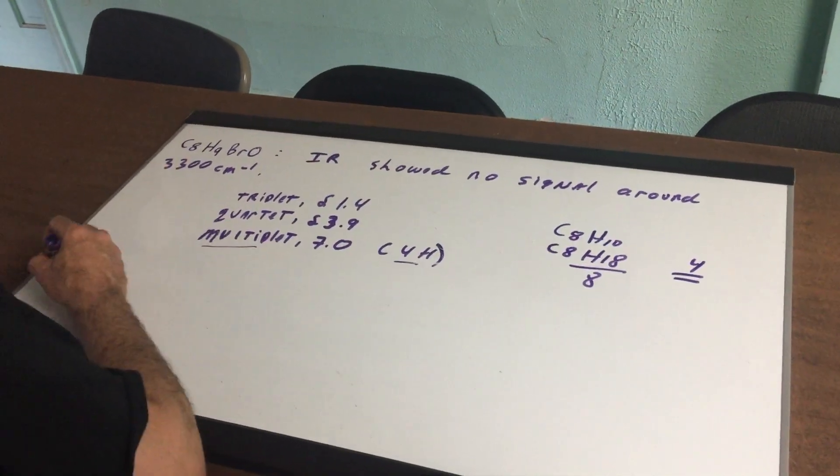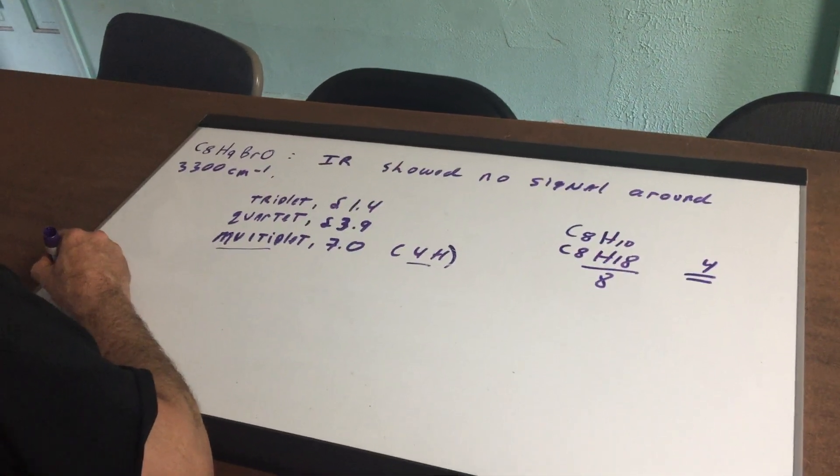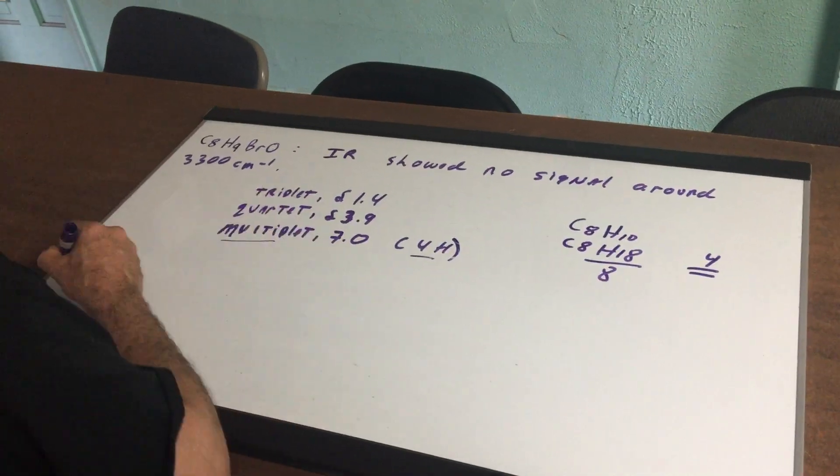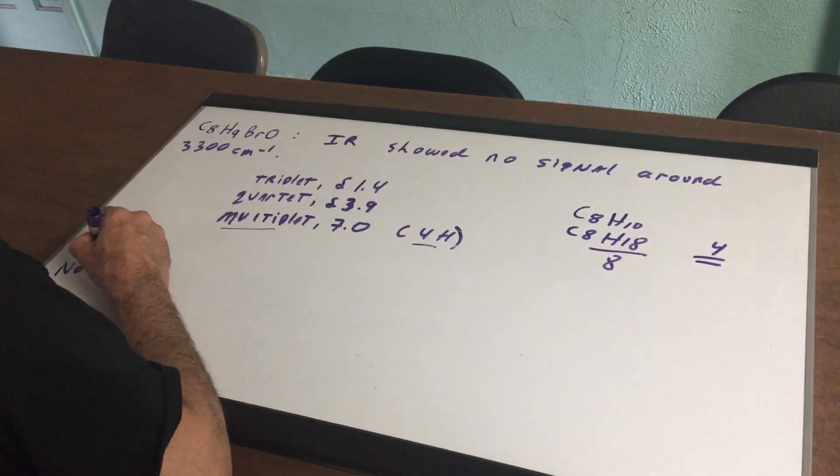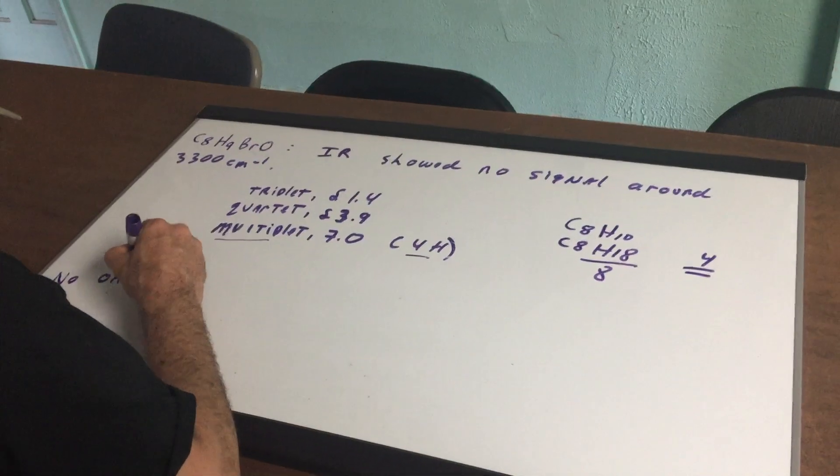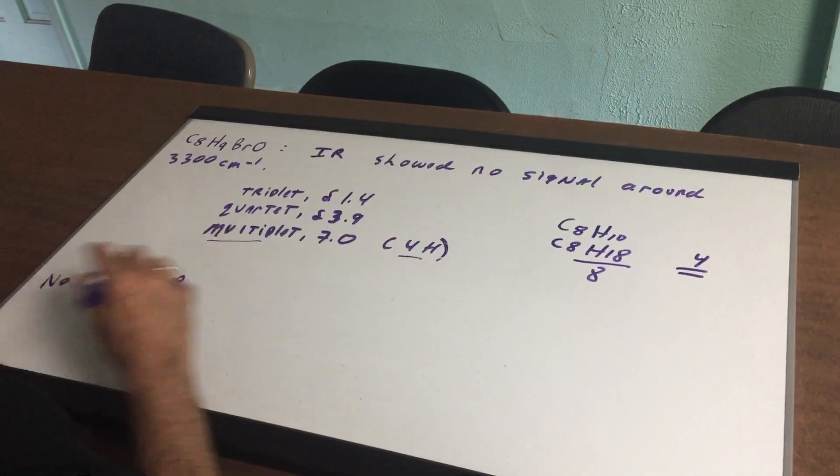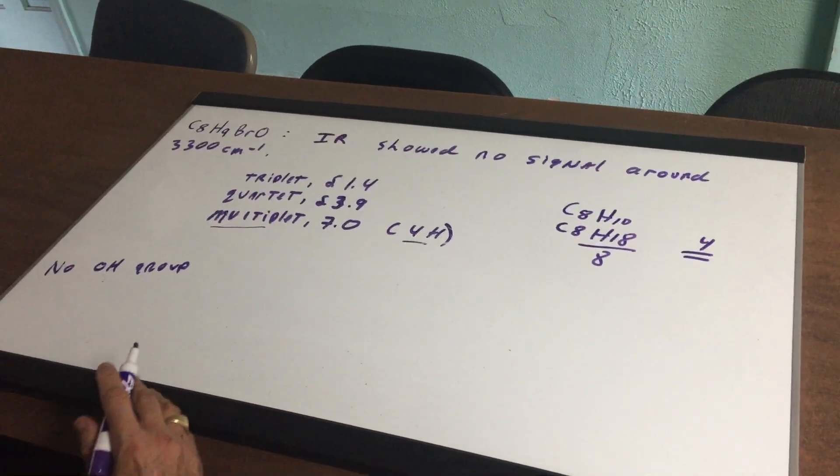Well first of all the 3300 means it says that there's no signal. So that suggests to me that there's no OH group present. I do not believe there is an alcohol group present in this compound.